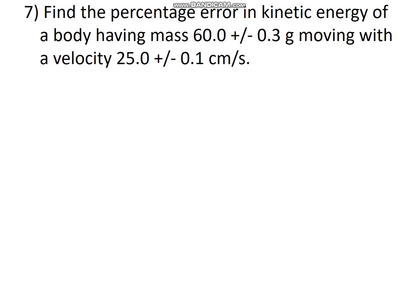Find the percentage error in the kinetic energy of a body of mass 60 grams plus or minus 0.3 grams, moving with a velocity 25 cm/s plus or minus 0.1 cm/s. You got mass which is 60 grams, with error of 0.3 grams, velocity of 25, and error in velocity which is 0.1.